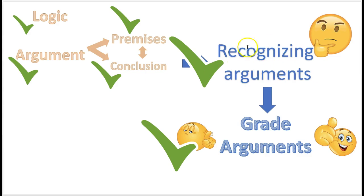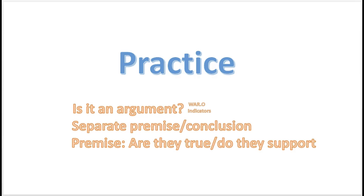You know how to recognize an argument — look for indicator words to find the premise and conclusion; if it has a premise and a conclusion, it's an argument. You also know what non-arguments are: warning, advice, report, or opinion. You know how to grade arguments: first step, separate the premise and the conclusion; then zero in on the premise. Ask yourself: are the premises true, and do they support the conclusion? Now it's time to practice. Here's a key: first, find out if it's an argument; next, separate the premise and conclusion; then focus in on the premises — are they true, and do they support the conclusion?